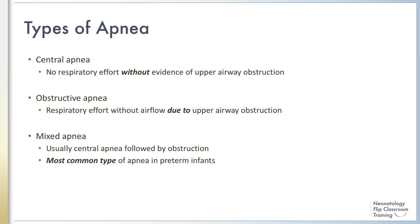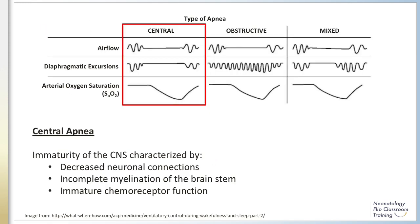Mixed apnea is a combination of both central and obstructive apnea. What usually occurs is an episode of central apnea followed by upper airway obstruction caused by delayed activation of upper airway muscles once spontaneous respiratory effort resumes. Mixed apnea is thought to be the most common type of apnea in preterm infants.